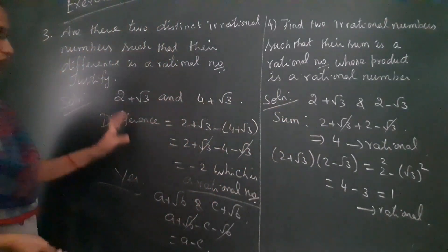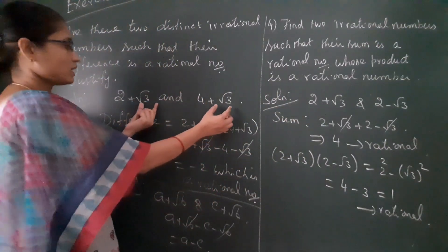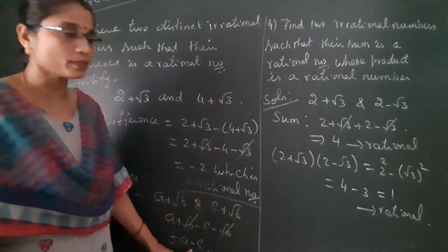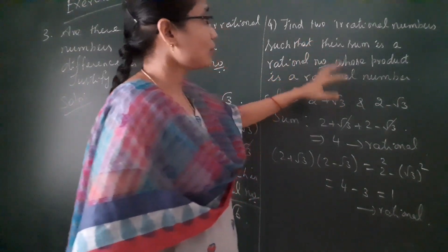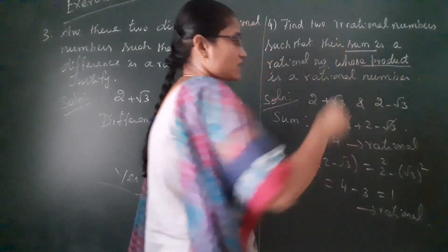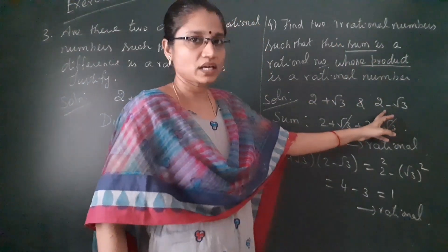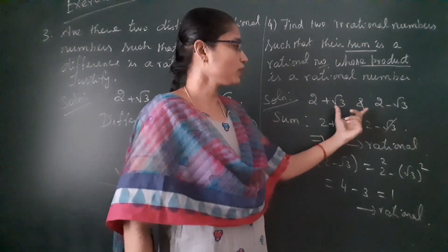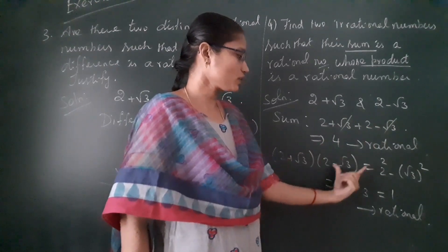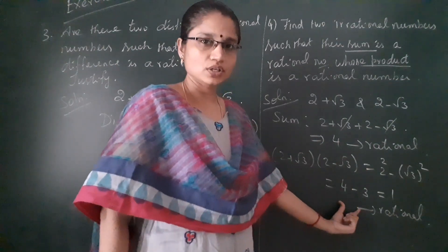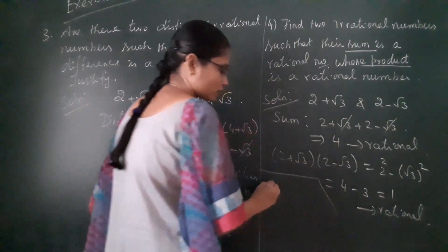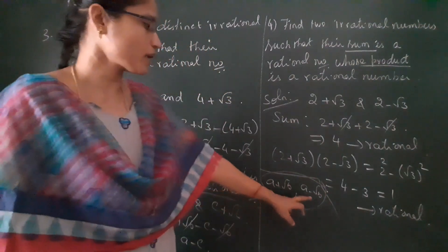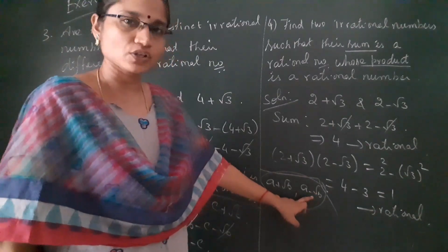So if you want the difference to be rational, consider numbers of the form a + √b and c + √b. If you want the sum and product to also be rational, just take the conjugate: 2 + √3 is irrational and its conjugate is 2 − √3. In general form, take a + √b and a − √b — their sum and product will both be rational numbers.